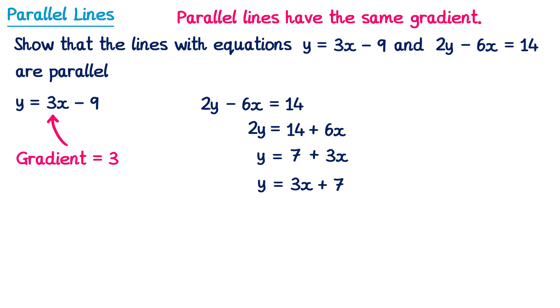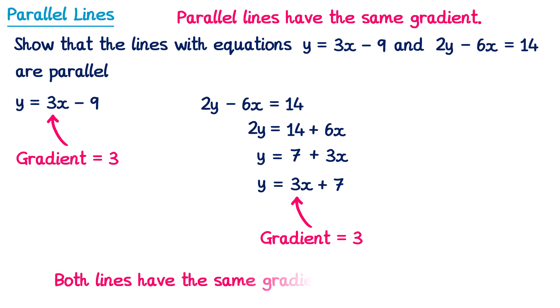This is now in the form y equals mx plus c, and you can see that this number here is the gradient, which is 3. So we've shown that both of these lines have the same gradient. You're probably best to write a concluding statement at the end of a question like this, so you may say: both lines have the same gradient, so they are parallel.